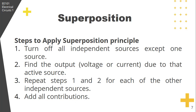Now to apply superposition, we follow these steps. First, turn off all independent sources except one source. This implies that we replace every voltage source by zero volts — that is a short circuit — and every current source by zero amperes — that is an open circuit.